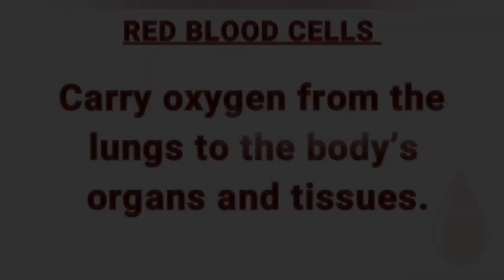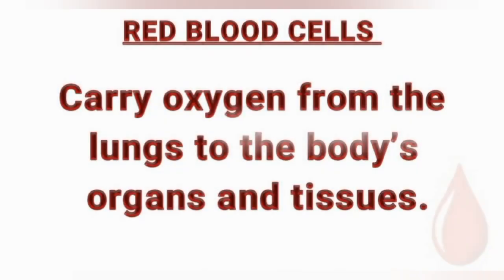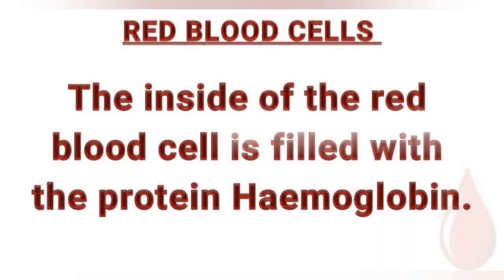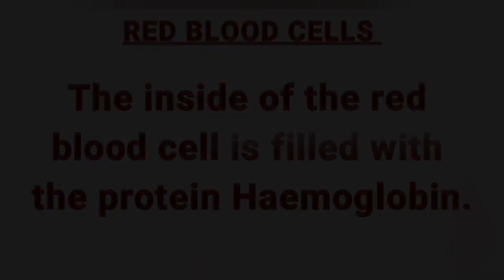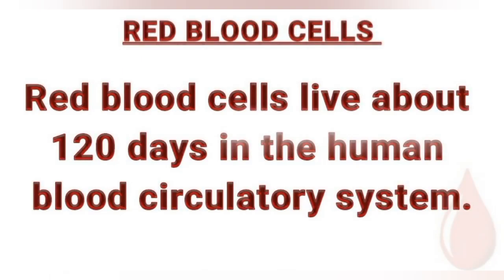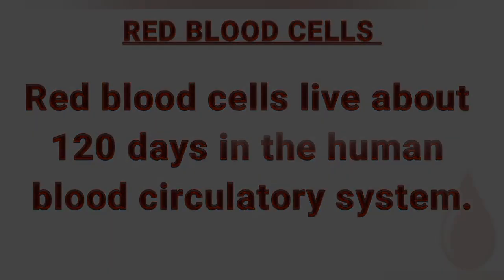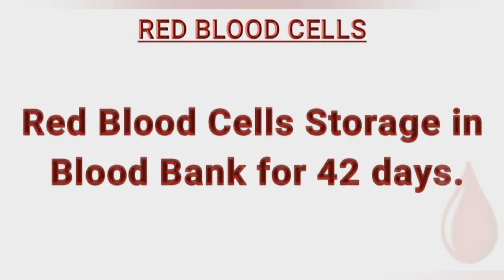Red blood cells carry oxygen from the lungs to the body's organs and tissues. The inside of red blood cells is filled with the protein hemoglobin. Red blood cells live about 120 days in the circulatory system. Red blood cells can be stored in a blood bank for 42 days.